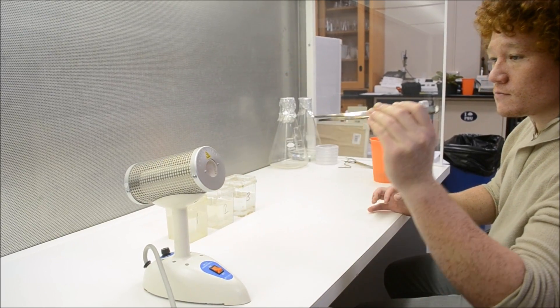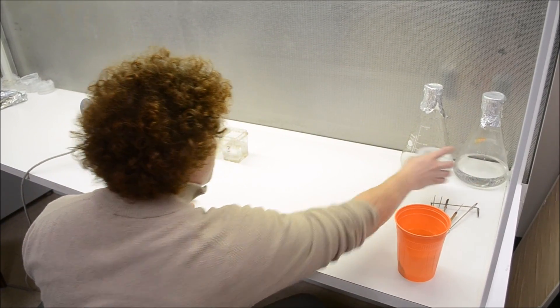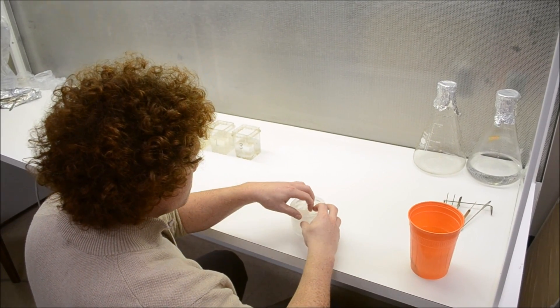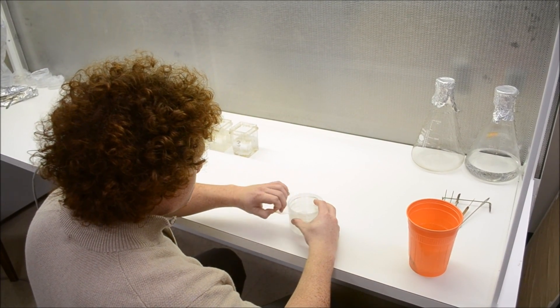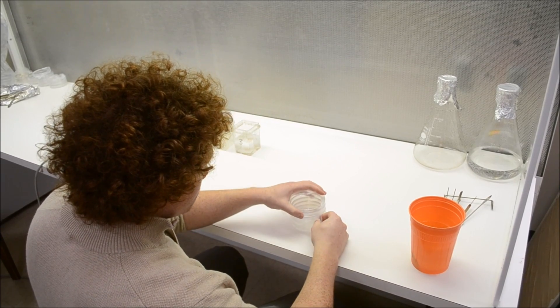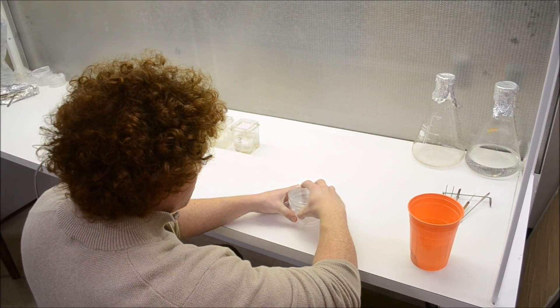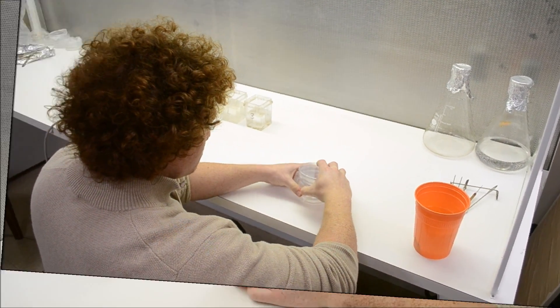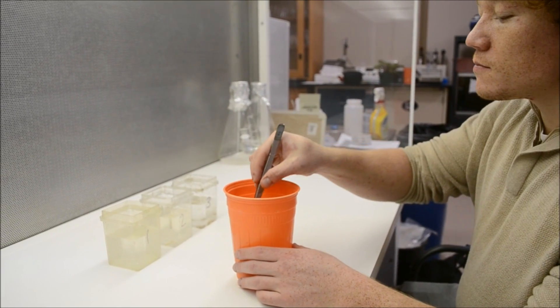Once your tools are sterilized, unwrap several petri dishes. The use of the petri dishes will range from cutting stages to actual in vitro propagation containers. Gel medium to encourage growth, such as BA and NAA, can also be added to these petri dishes.